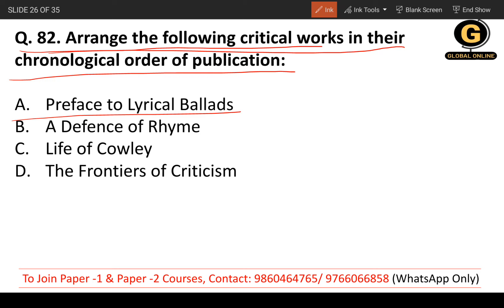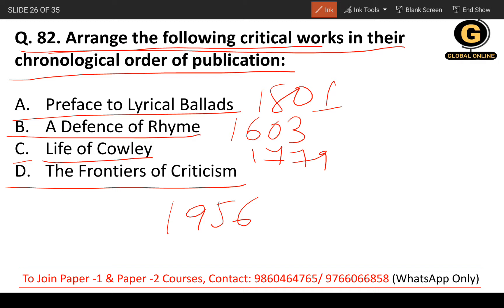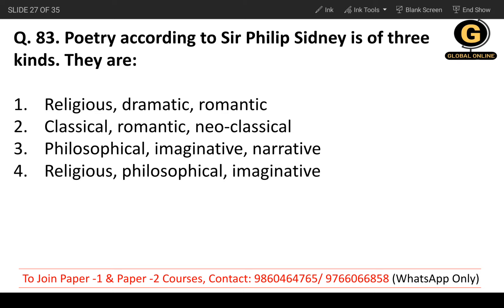Question 82: Arrange the following critical works in chronological order of publication. 'Preface to Lyrical Ballads' by William Wordsworth was published in 1801. 'A Defense of Rhyme' by Samuel Daniel was published in 1603. 'Life of Cowley' by Samuel Johnson was published in 1779. 'The Frontiers of Criticism' by T.S. Eliot was published in 1956. The correct chronological order is B, C, A, D.